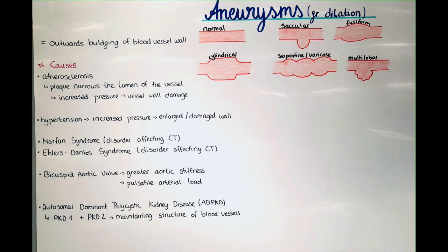Marfan syndrome is an autosomal dominant disorder which affects the connective tissue. There is a defect in the gene coding for the structure of fibrillin and elastic fibers — more specifically, a defect in the fibrillin-1 gene — and this leads to aortic aneurysms or brain aneurysms due to this weakened connective tissue.